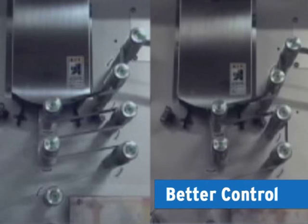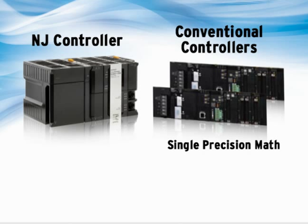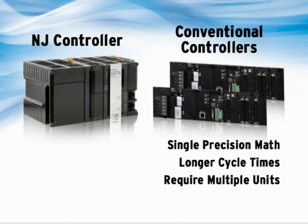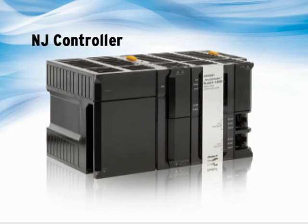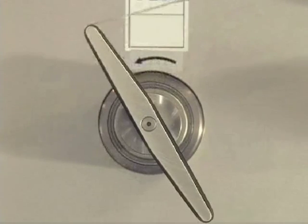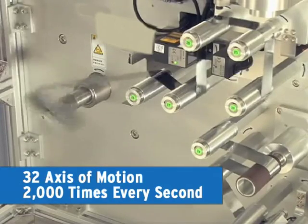This advanced feed-forward control strategy is easily implemented in the NJ controller. The NJ controller also provides a significant speed advantage. Conventional controllers using only single precision math or longer cycle times often require multiple units at twice the cost. In contrast, with faster cycle times and double precision math, the NJ controller is the clear choice in high-speed applications common in today's automated manufacturing. The single NJ machine automation controller not only does calculations faster, but also executes user-written programs and assesses and corrects up to 32 axes of motion 2,000 times every second.